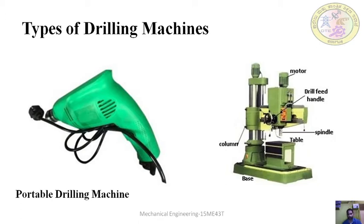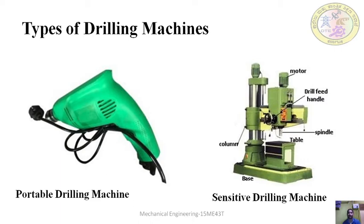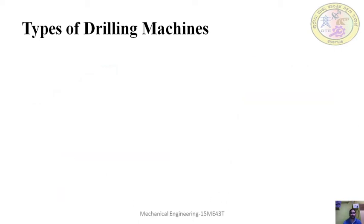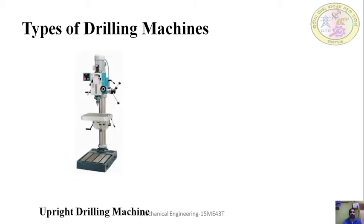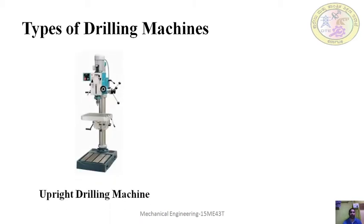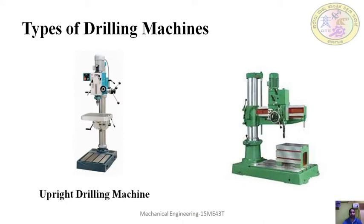Next is the sensitive drilling machine, which you usually see in workshops. It is heavier in construction and fixed in position, unlike the portable drilling machine — you cannot carry it to any place. It has a base installed at a fixed location. Next is the upright drilling machine, and then the radial drilling machine, which we will discuss in more detail later.